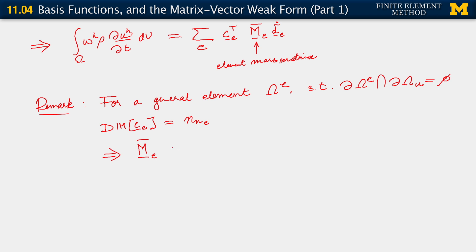Recall that the M bar matrix is now going to have this form. M_11^e up to M_1n_n^e. M_n_n^e, n_n^e, e. And here we'll have M_n_n^e, 1^e.